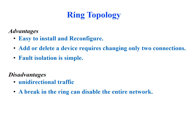Advantages of ring topology: it is easy to install and reconfigure. Since each device is linked only to its immediate neighbors, adding or deleting a device requires changing only two connections. Fault isolation is very simple. On the disadvantage side, unidirectional traffic is the foremost issue. A break in the ring can disable the entire network, though this can be solved by having a dual ring.